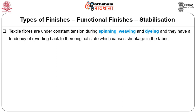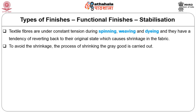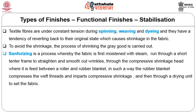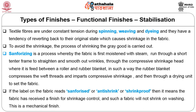To avoid shrinkage, the process of shrinking the grey goods is carried out. Sanforizing is a process whereby the fabric is first moistened with steam, run through a short stenter frame to straighten and smooth out wrinkles, then through a compressive shrinkage head where it is fed between a roller and a rubber blanket — the rubber blanket compresses the weft threads and imparts compressive shrinkage — and then through a drying unit to set the fabric. If the label reads Sanforized, anti-shrunk or shrink-proof, the fabric will not shrink on washing.